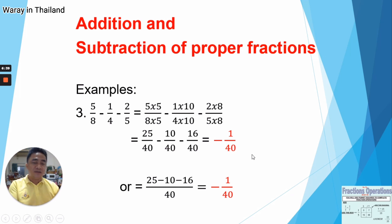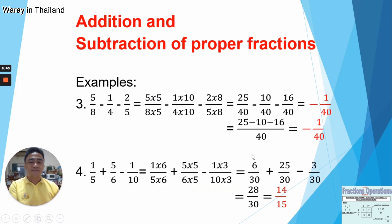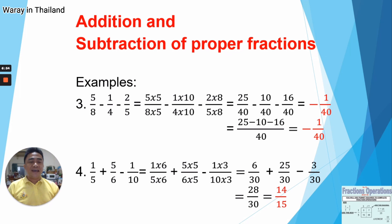We have here one more example. We have the fractions 1 over 5 plus 5 over 6 minus 1 over 10. For this one, we have denominators 5, 6, and 10. So we need to know first what is the LCM, and that is 30. 30 is the LCM of 5, 6, and 10.